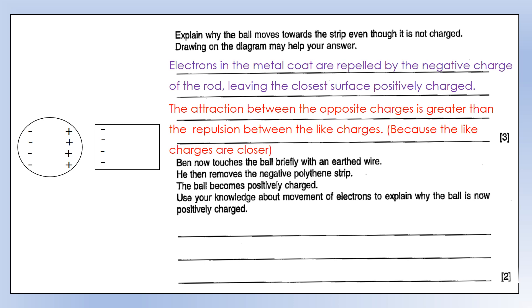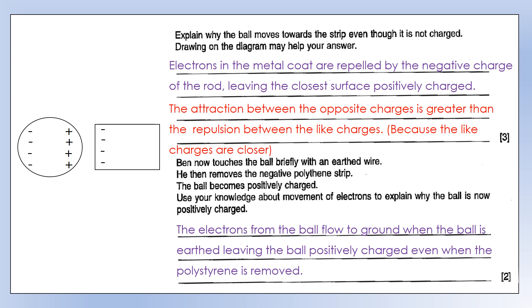Ben now touches the ball briefly with an earthed wire and then removes the negative polythene strip. The ball becomes positively charged. Use your knowledge about movement of electrons to explain why. What's going to happen is when you earth the ball, electrons from the ball flow to the ground. Because you've concentrated the negative charges together, they're going to be at high potential energy, so they're going to move towards the ground. That's going to leave the ball positively charged because it's lost electrons, even when the polythene is removed.